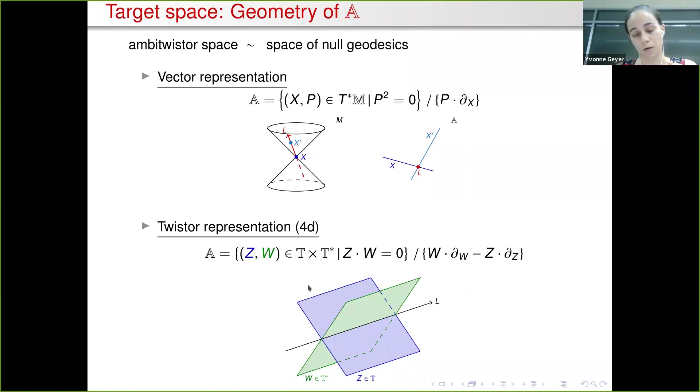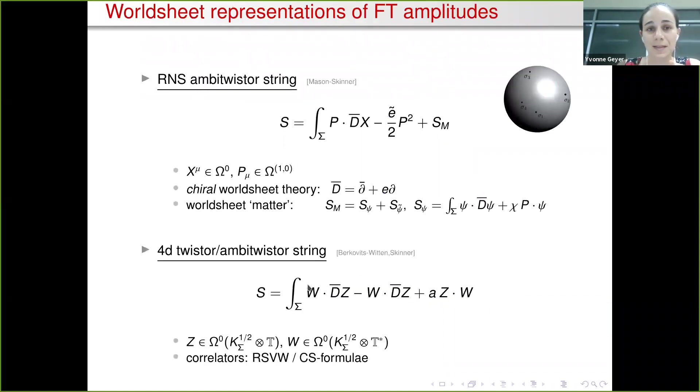We have an alternative description at least in 4D in terms of this twistor and dual twistor variables, just as a quadric inside T cross T star. This means that in addition to the RNS ambitwister string, at least in 4D what we can do is write down the Berkovits-Witten twistor string, which just lifted the contact structure and pulled it back to the worldsheet sigma here. This just gives you this, and then an additional Lagrange multiplier constraint Z dot W enforces the target space quadric that we've seen on the last slide.